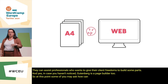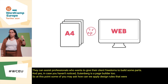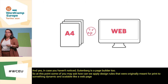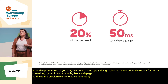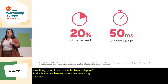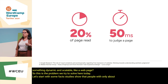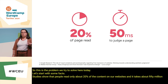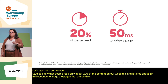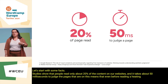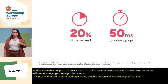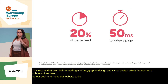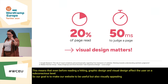At this point, some of you may ask: how can we apply design rules that were originally meant for print to something dynamic and scalable like a web page? This is the problem we try to solve here today. Studies show that people read only about 20 percent of the content on our websites, and it takes about 50 milliseconds to judge the page. This means that graphic design and visual design affect the user on a subconscious level. So our goal is to make our website useful but also visually appealing — visual design matters.